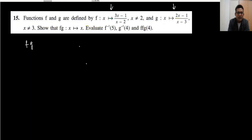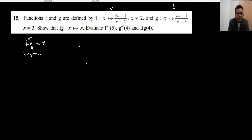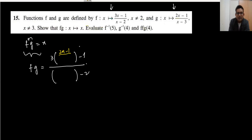Question number 15 involves two functions f and g. We need to show f∘g(x) = x, and evaluate f⁻¹(5), g⁻¹(4), and f(f(g(4))). To show f∘g = x, substitute the whole expression of g in place of x in f — taking the LCM causes the denominator to cancel out and gives the answer x.